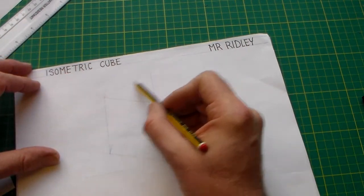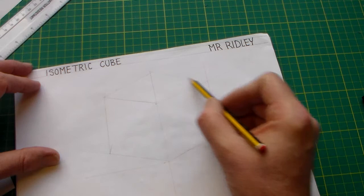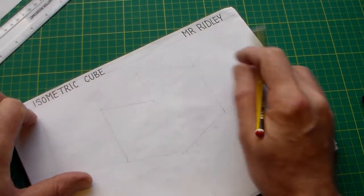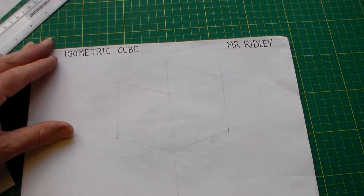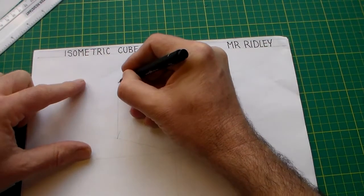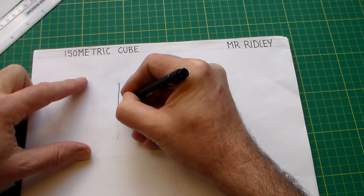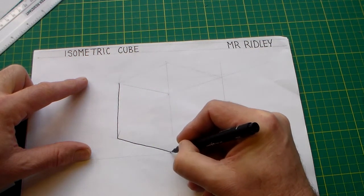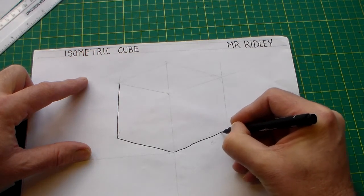Then the last part of our cube is just to bring these lines up at again 30 degrees, but in the other direction to our cube. So I'm going to take a fine liner now, and you could use a pencil.